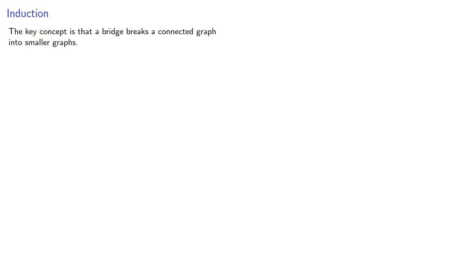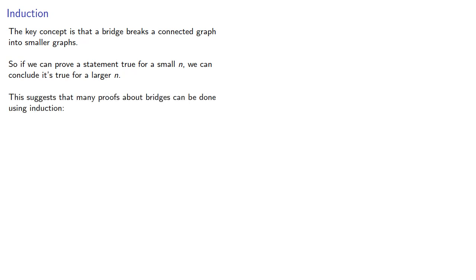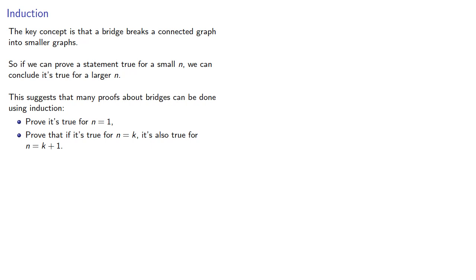So how can we prove this? The key concept is that a bridge breaks a connected graph into smaller graphs. So if we can prove a statement true for small n, we can conclude it's true for larger n. This suggests that many proofs about bridges can be done using induction. We'll prove it's true for a first case, and then prove that if it's true for some case, it's also true for the next larger case.